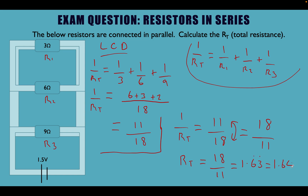When we type that into our calculators we get 1.63 recurring, which we round to 1.64 — the same answer as last time. Remember: resistors in parallel, the total resistance is always lower than any individual resistor. 1.64 is lower than 3, 6, and 9, so the answer is correct.